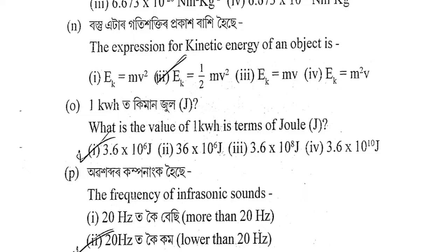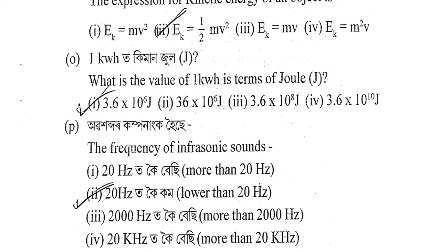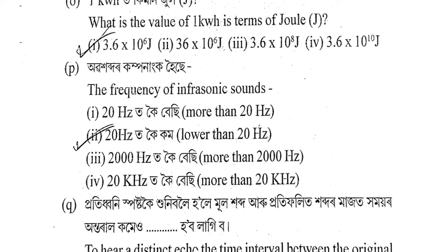Next question: 1 kW ki maan Joule thaake? What is the value of 1 kWh in terms of Joules? The correct answer is option 1 — 3.6 × 10⁶ Joules.